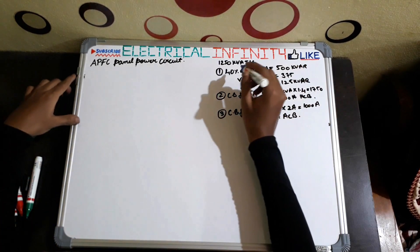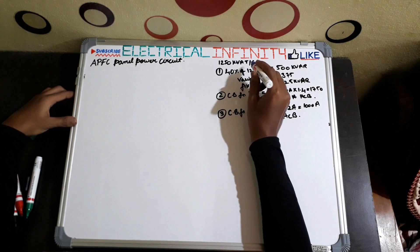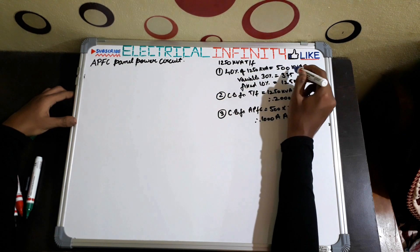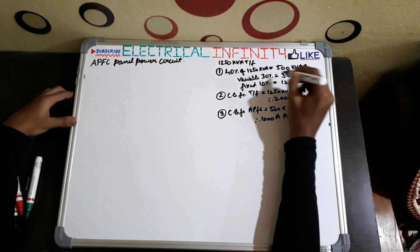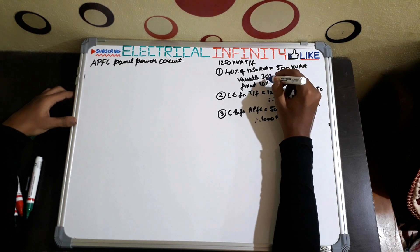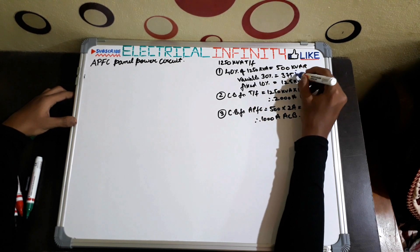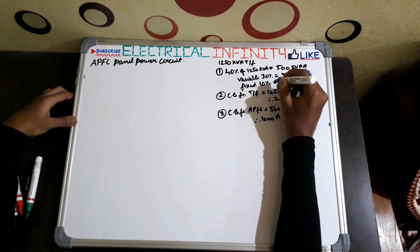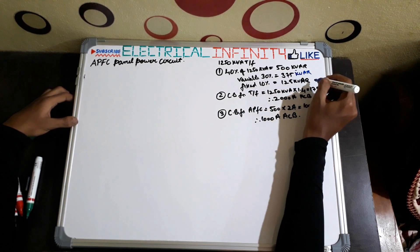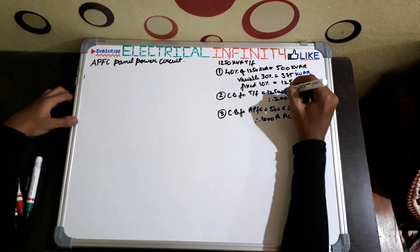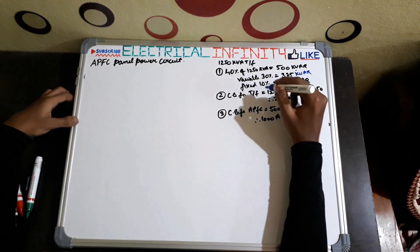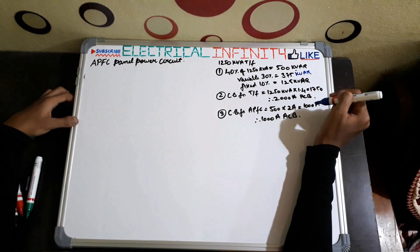To summarize: we have a 1250 kVA transformer. 40% of 1250 kVA is 500 kVAr of total capacitors — 30% variable capacitors are 375 kVAr and 10% fixed capacitors are 125 kVAr. The circuit breaker for the transformer is a 2000 ampere ACB, and the circuit breaker for the APFC panel is a 1000 ampere ACB.